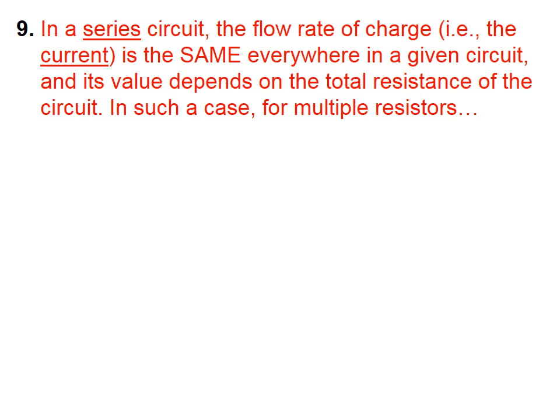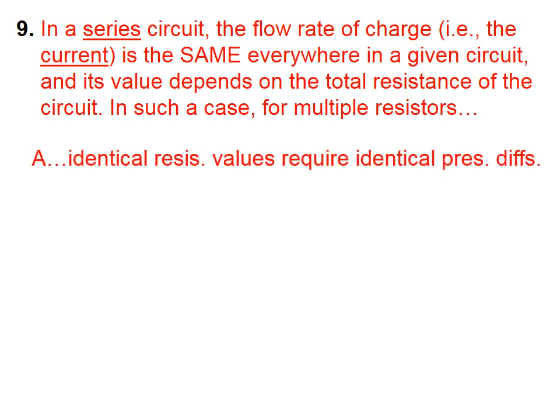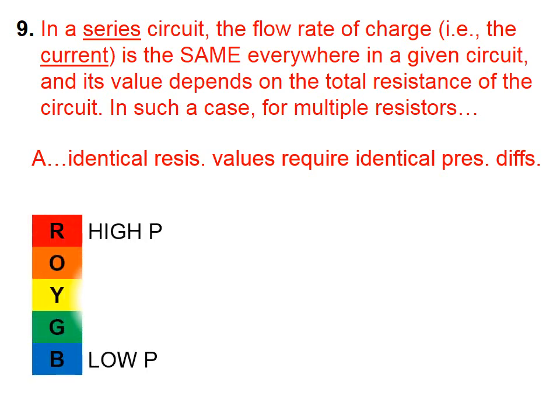In a series circuit, the flow rate of charge — i.e. the current — is the same everywhere in a given circuit, and its value depends on the total resistance of the circuit. In such a case, for multiple resistors, identical resistance values require identical pressure differences. Let's take a couple of examples.